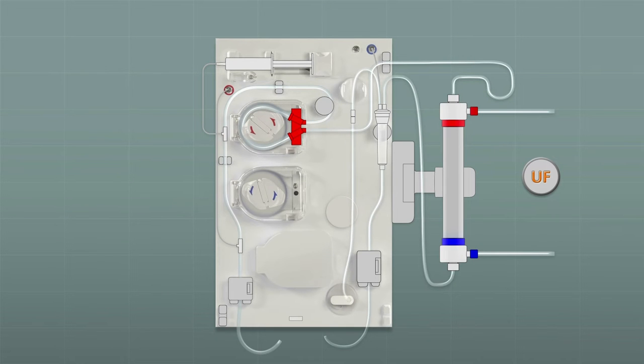The overflow line is attached to the drain port. The arterial and the venous line are connected.